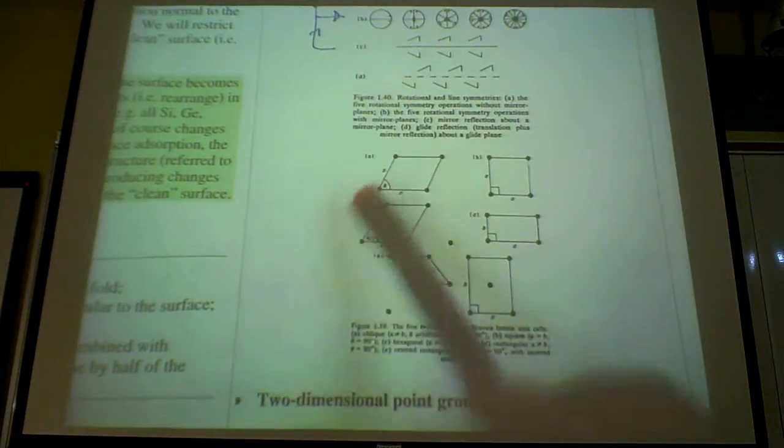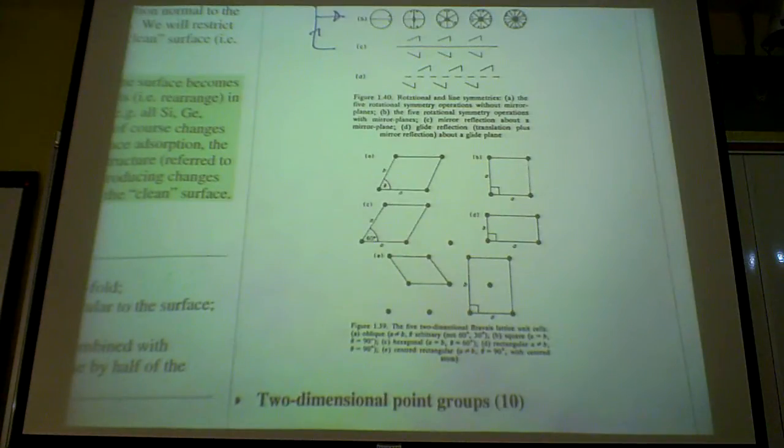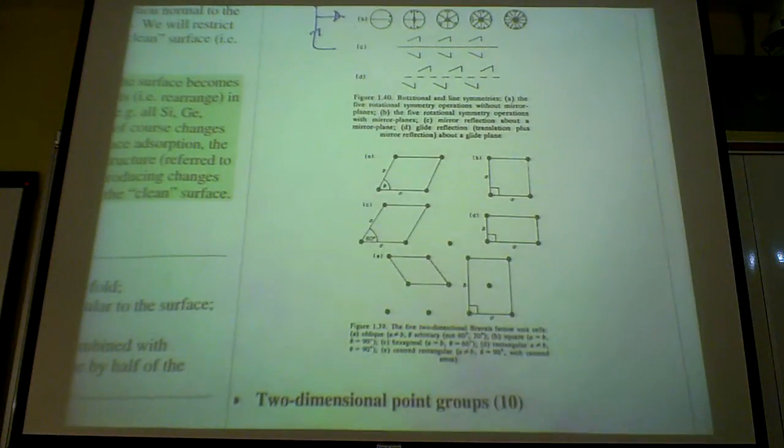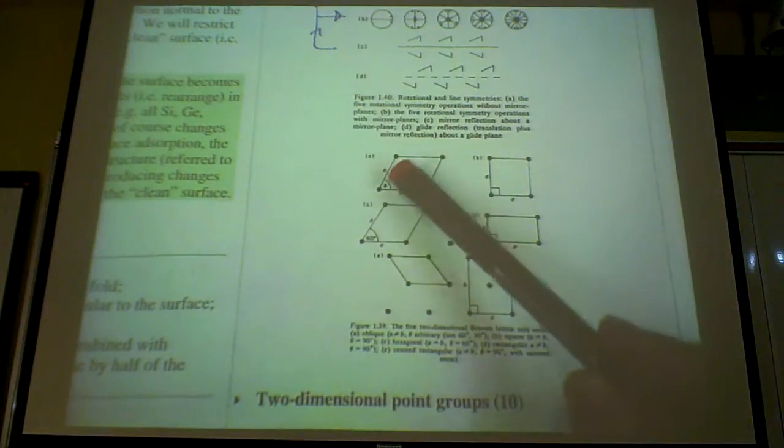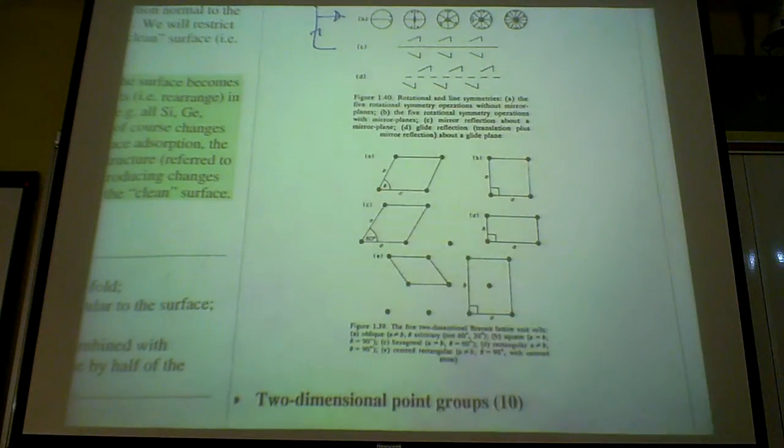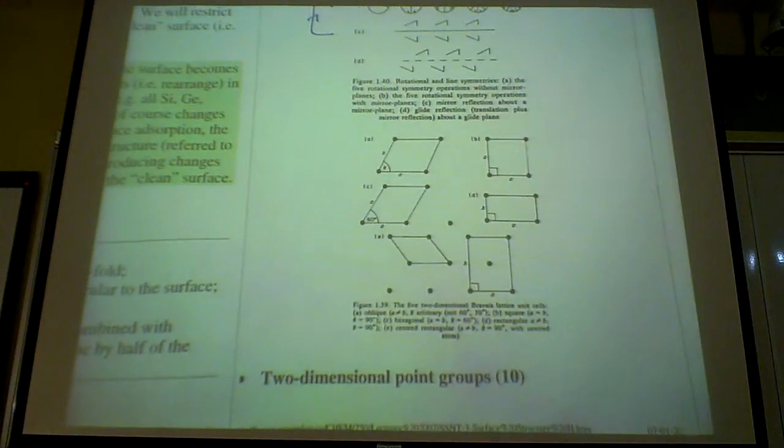And you use this sort of lattice unit cell to construct the entire surface. So we could use this unit cell on this skeleton, the backbone if you like, whereby you can build your structure. And there are 10, based on this Bravais lattice, 10 point groups.